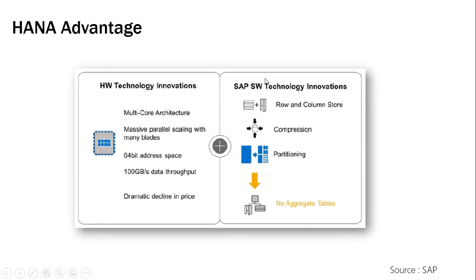This was not just hardware innovation but software innovation as well. At the hardware level, SAP HANA has a multi-core architecture, massive parallel processing, and a 64-bit address space upgraded from 32-bit, with a data throughput of around 100 GB per second. Declining hardware prices have also helped. On the software side, there is columnar storage, huge compression, partitioning options, and no aggregate tables.